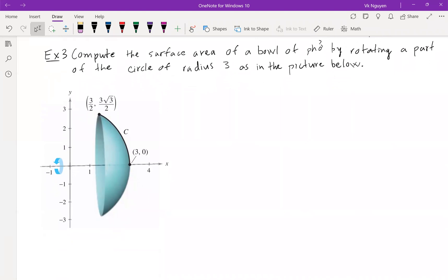Example 3: Compute the surface area of a bowl of fur by rotating a part of the circle of radius 3, as in the picture below. A circle of radius 3 is x squared plus y squared equals 3 squared. We can solve for y, but then we're going to get into the square root, and if we get into the square root, we're going to use trig substitution, and it can be a little complicated. So one of the better way to approach this problem is parametrize the circle.